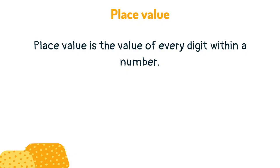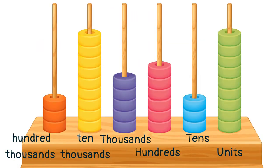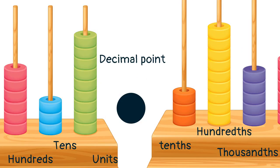Place value is the value of every digit within a number. This is the order of place values in whole numbers. This is the order of place values in decimal places.